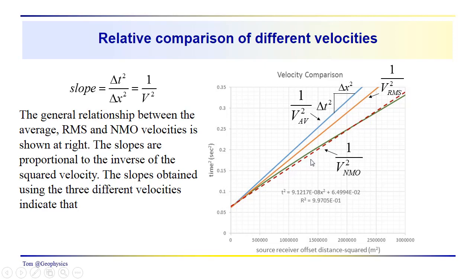And then down here we have the NMO velocity, which is a best fit line to the actual green reflector here. And you can see where over here the slope is less than the VNMO, or is greater than the VNMO, so the VNMO velocity for the short offsets would be less than the VNMO that we have here.